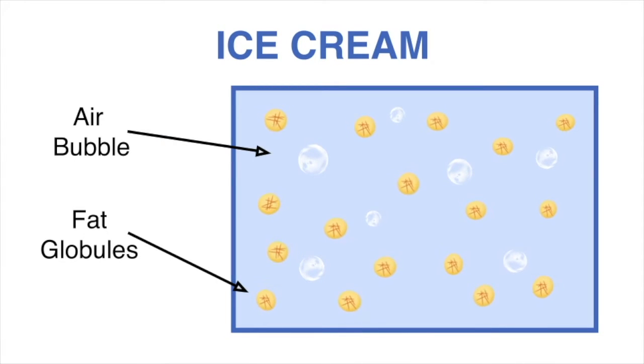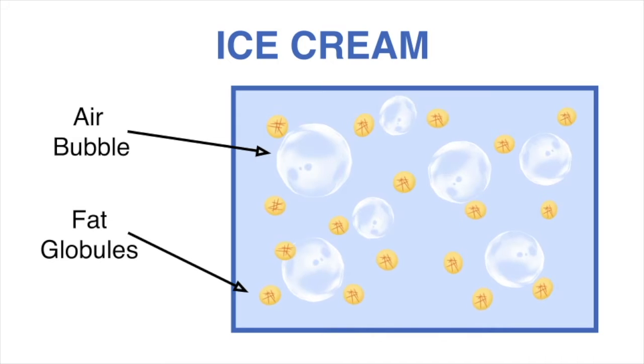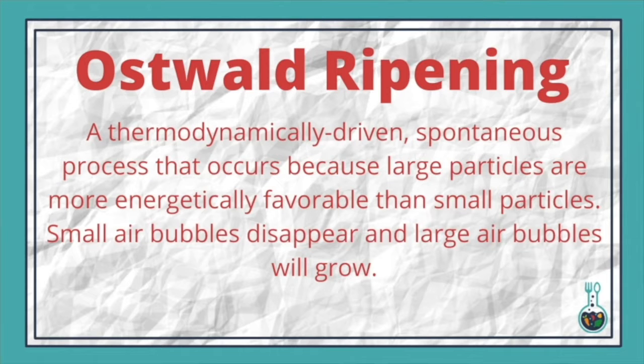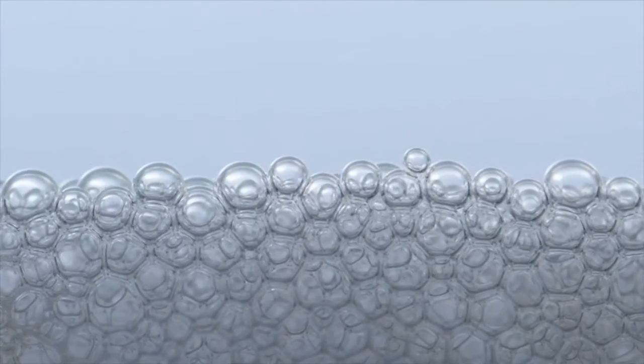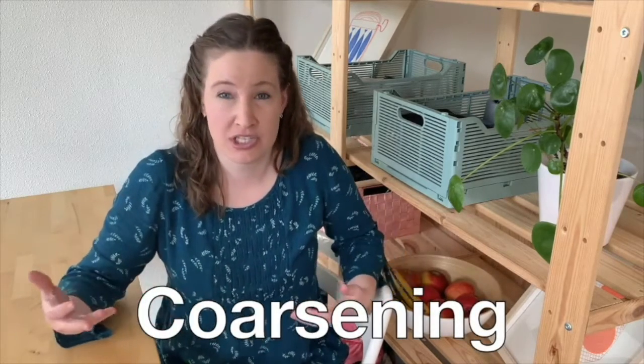When it comes to air bubbles, the best strategy is to try and get the smallest air bubbles possible. The reason is that air bubbles only grow over time, due to something called Ostwald ripening. The theory is that very tiny air bubbles have a high surface area and are less energetically favorable. Over time, these small air cells disappear while larger air bubbles grow, because they have a relatively lower surface area. We call this defect 'coarsening' — the air cells get coarser and coarser until they eventually form tunnels or large air gaps in the ice cream.